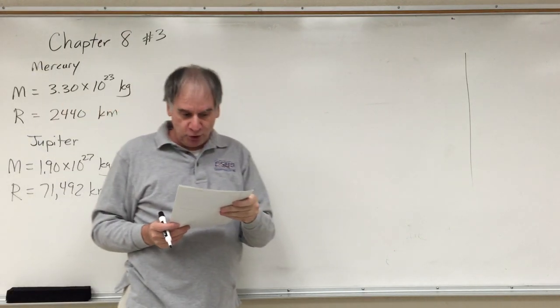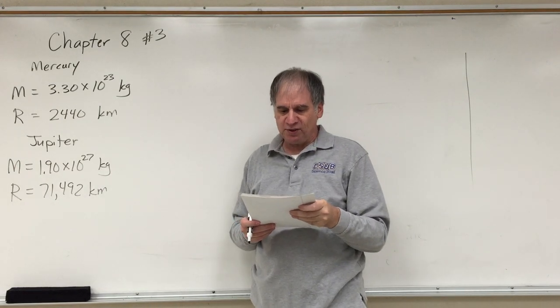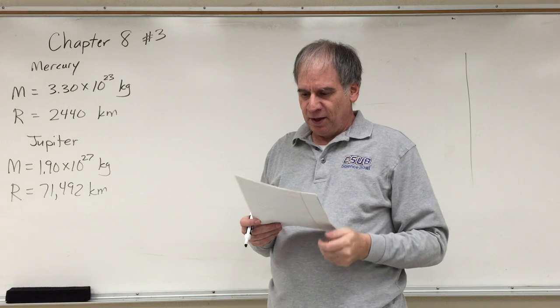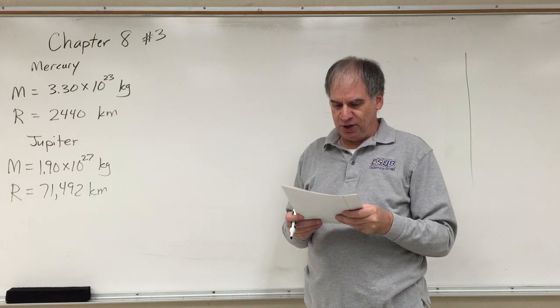Look up the mass and radius of Mercury and Jupiter and calculate their escape velocities using an expression in Chapter 3. Does this help you see why the one body has an atmosphere but the other doesn't?